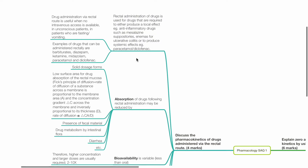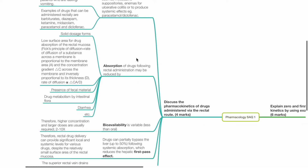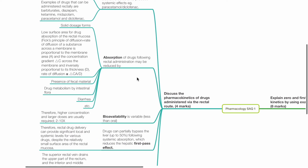Drug administration via the rectal route is useful when no IV access is available, in unconscious patients, and in patients who are fasting or vomiting. Absorption of drugs following rectal administration can be reduced by solid dosage forms and by the low surface area for drug absorption by the rectal mucosa, as the rate of diffusion across a membrane is proportional to the membrane area (A) and concentration gradient (ΔC), and inversely proportional to its thickness (D), based on Fick's principles of diffusion.